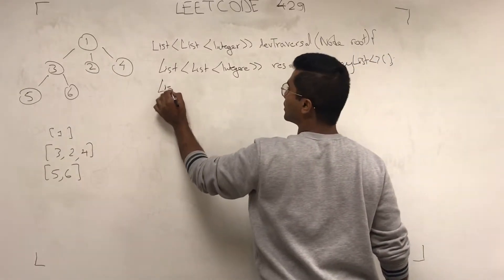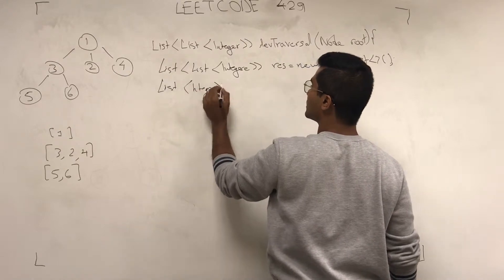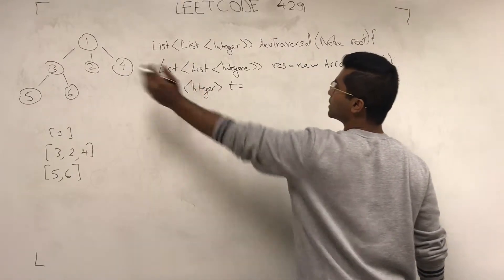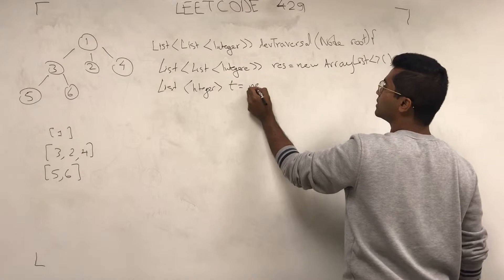And then I'm going to create a temporary variable, I'm going to call it t, which basically stands for temporary. When I do each level, it's going to hold it.